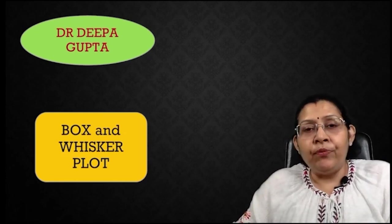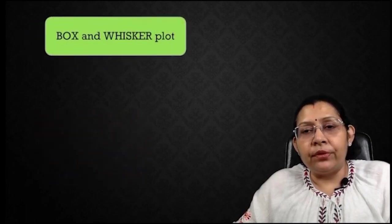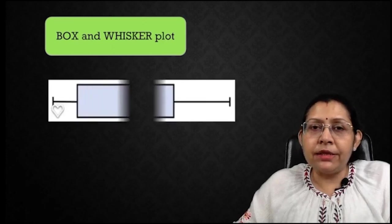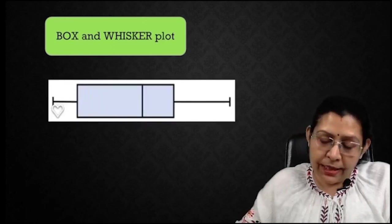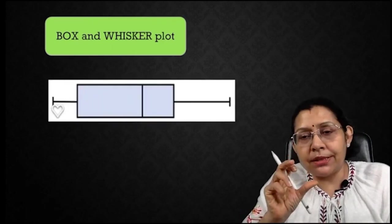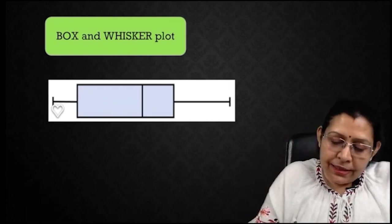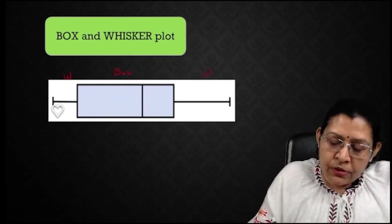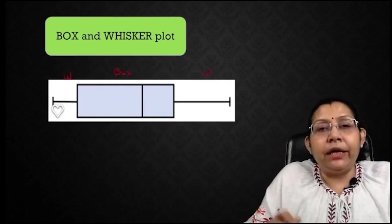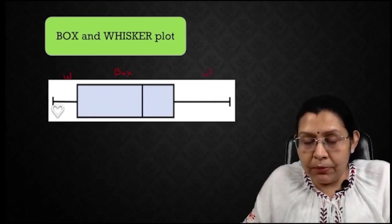So how are we going to identify the box and whisker plot? It looks like this — in the center there is the box and on the sides there is the whisker. By this we can identify that it is a box and whisker plot.